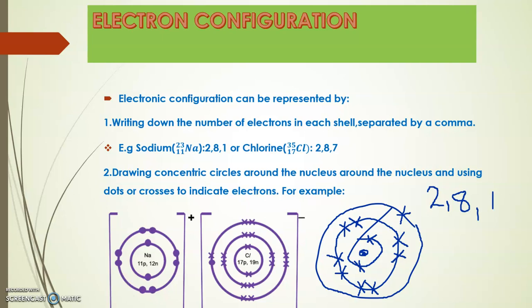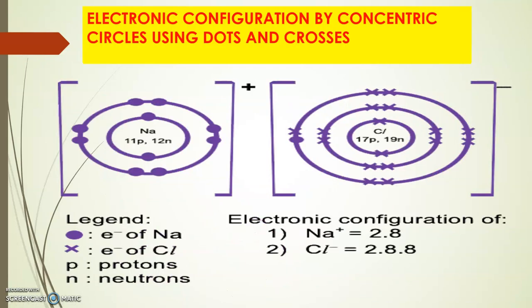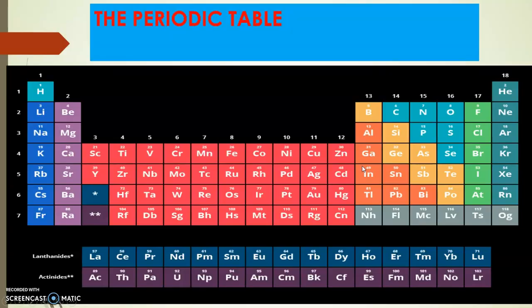So I've shown you the two ways in which we can actually show electronic configuration: by drawing the shells with electrons — at times using crosses as I have done here, or using dots as shown in the example at the bottom.